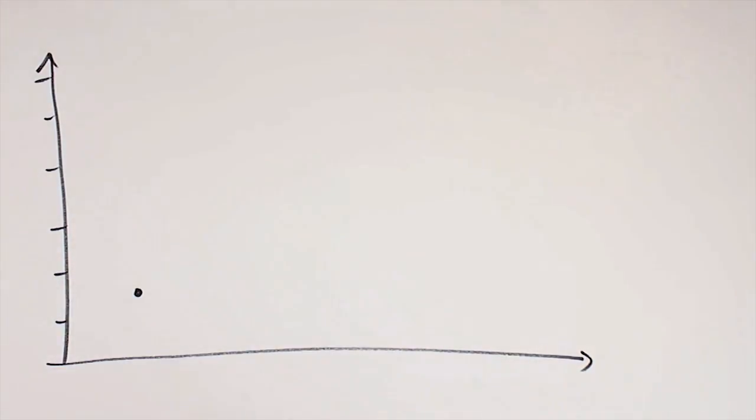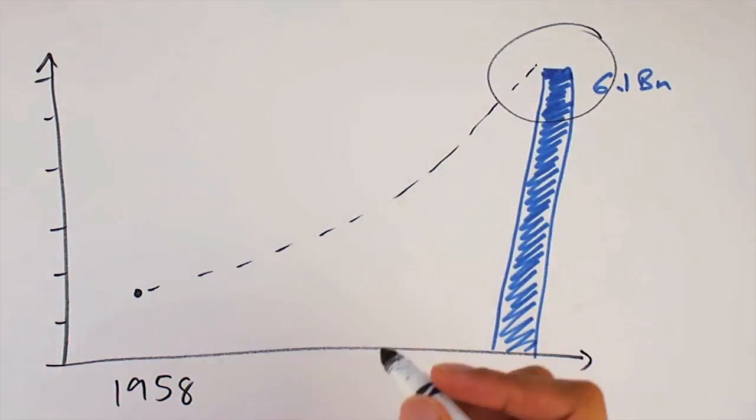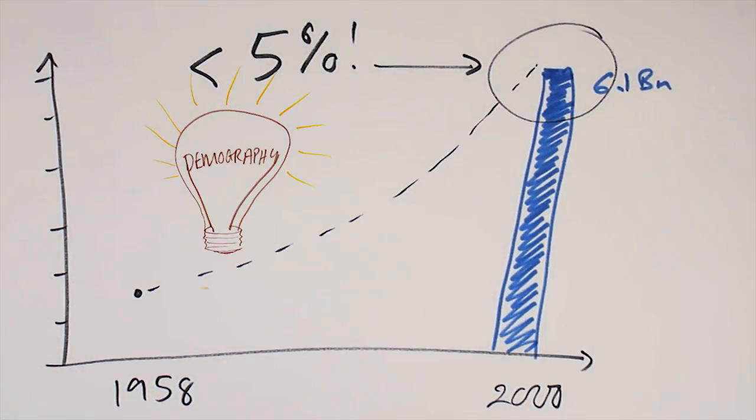In 1958, when the UN projected today's population, they were out by less than 5%. Pretty impressive. How many other 50-year projections are that good? That's demography at work.